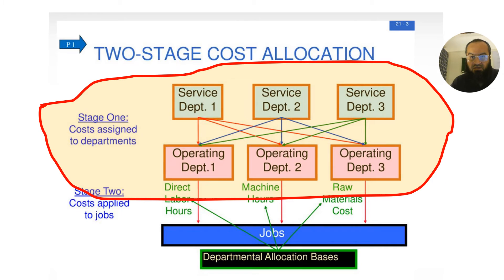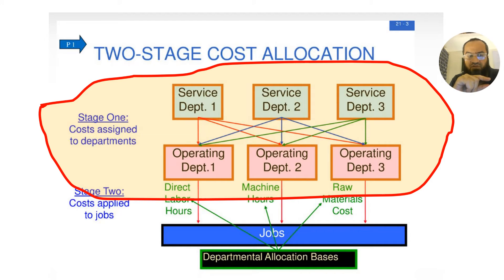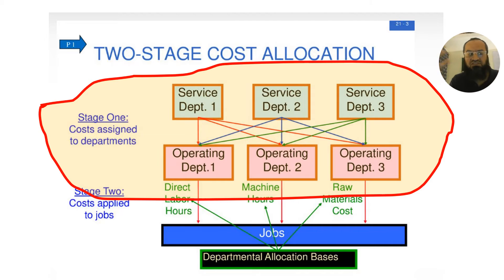Mapping this to SAP controlling, we need to keep in mind that in cost center accounting we do only stage one allocations, not stage two allocations. Stage two allocations means working out the cost of a product, job, or process, which is the goal of product cost controlling or product cost planning — a different sub-module in controlling. In cost center accounting we only do stage one allocation, which is transferring and allocating costs from service departments to production departments, or more generally from cost centers to cost centers.